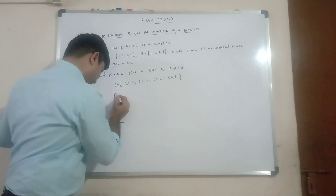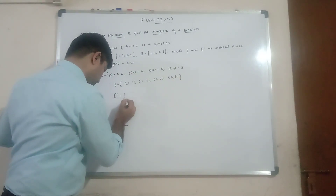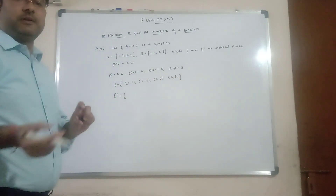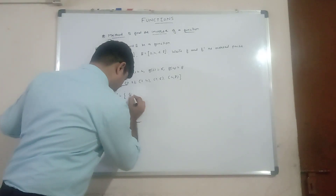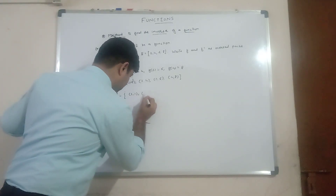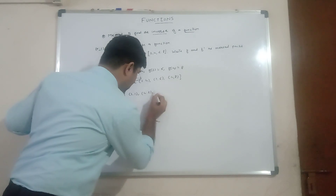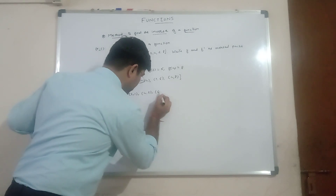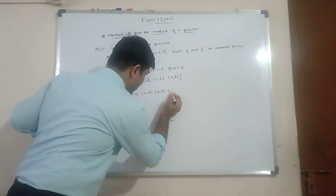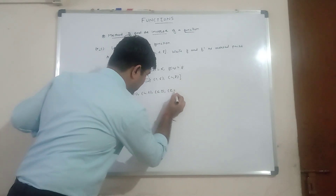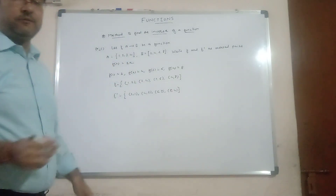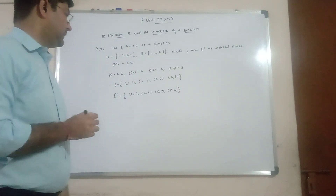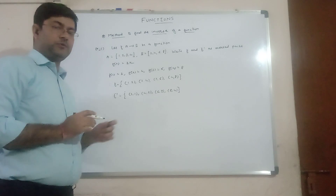To obtain f inverse, we simply reverse the ordered pairs. So f inverse = {(2,1), (4,2), (6,3), (8,4)}. This is the inverse of function f — there is no doubt.